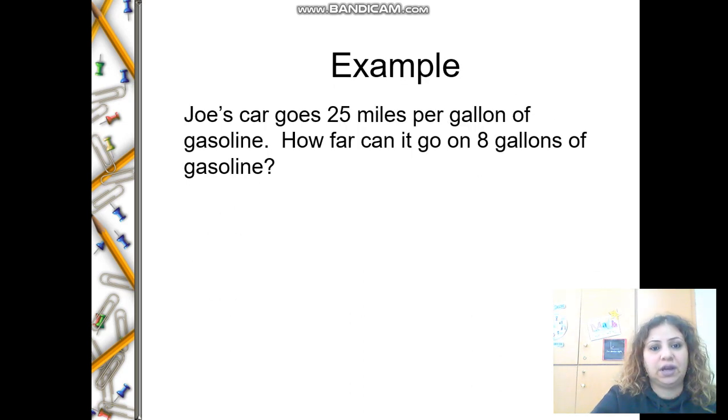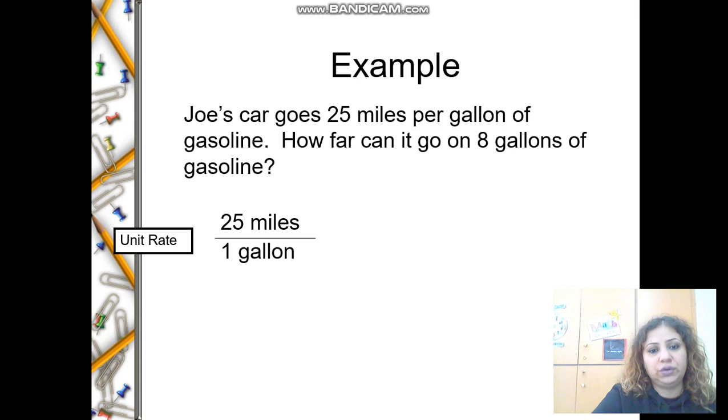Let's see how this is an example. Joe's car goes 25 miles per gallon of gasoline. How far can it go on eight gallons of gasoline? So 25 per one gallon—that's the unit rate we have.